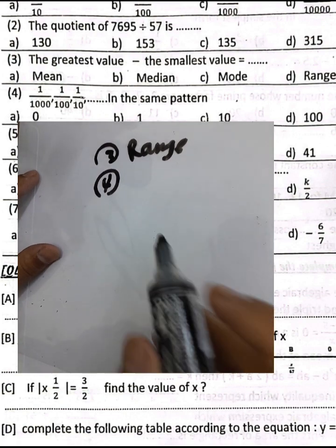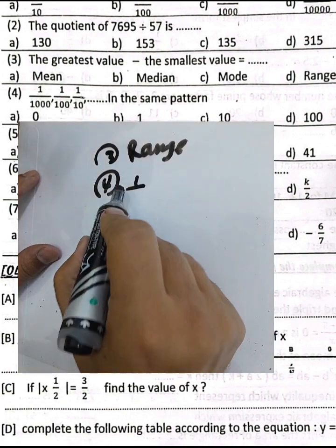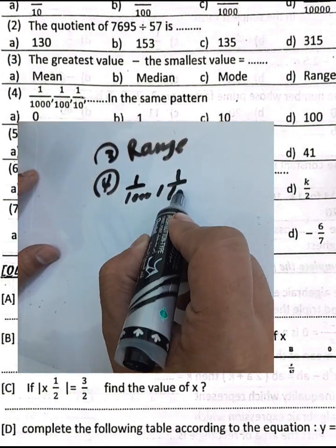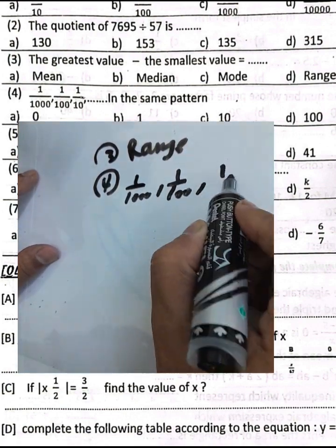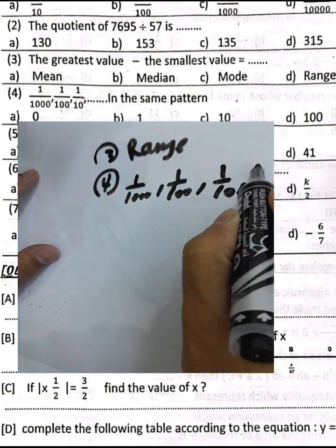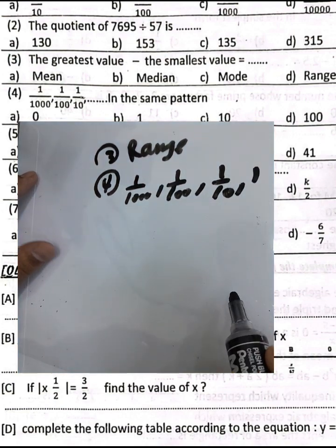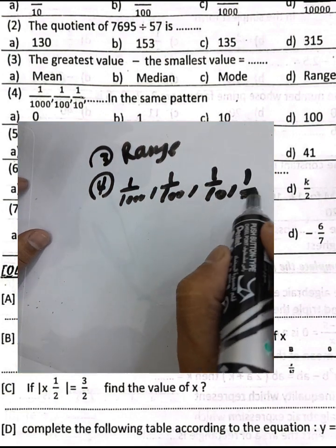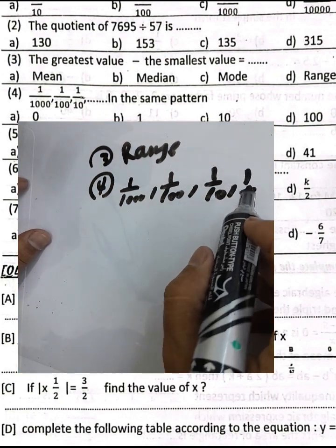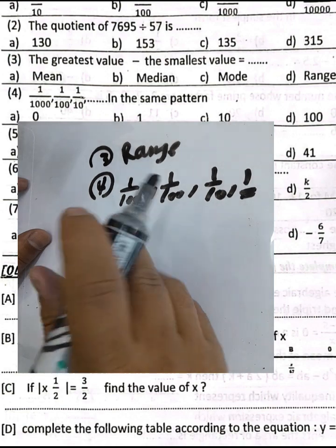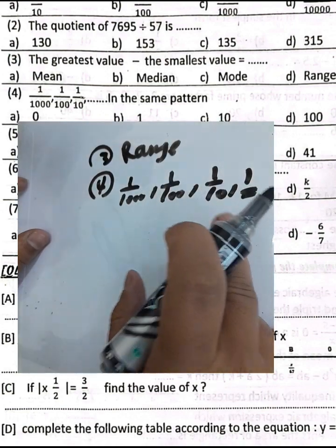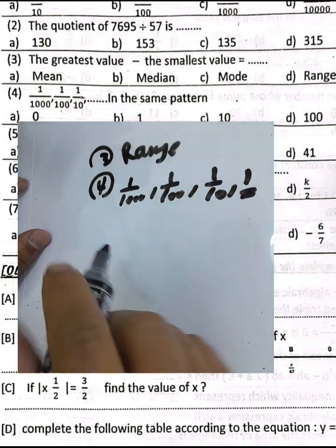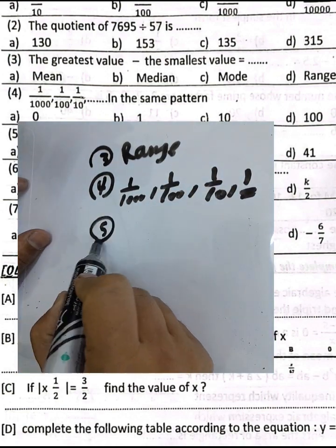Question number 4: Complete the pattern — 1 over 1000, 1 over 100, 1 over 10, then 1. Each term is multiplied by 10, so the next number is 1.